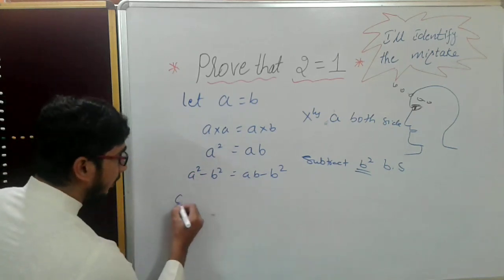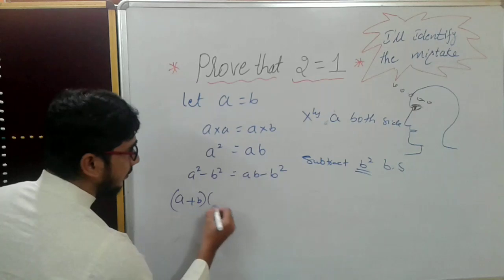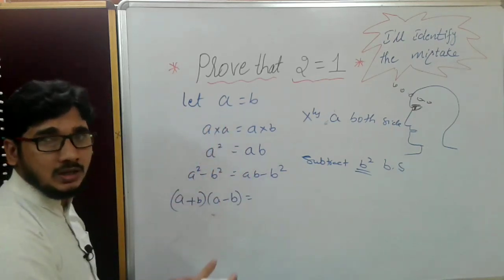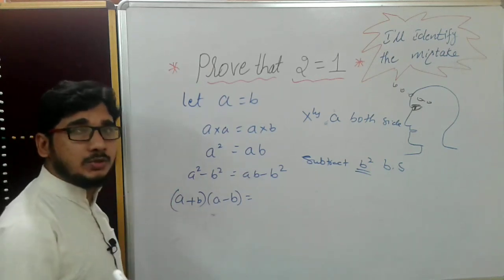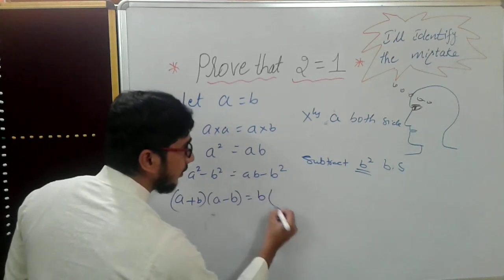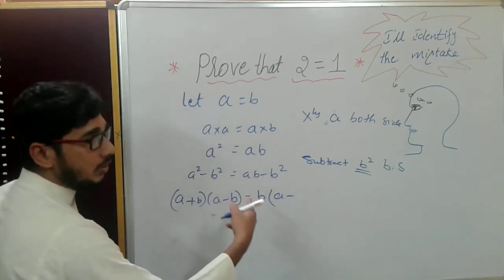I'm not doing any magic here, just mathematical calculation. But there is a mistake you have to find. So what is common here? b is common—take it out: b(a-b). One b came out, so one b is remaining. (a-b) gets canceled.